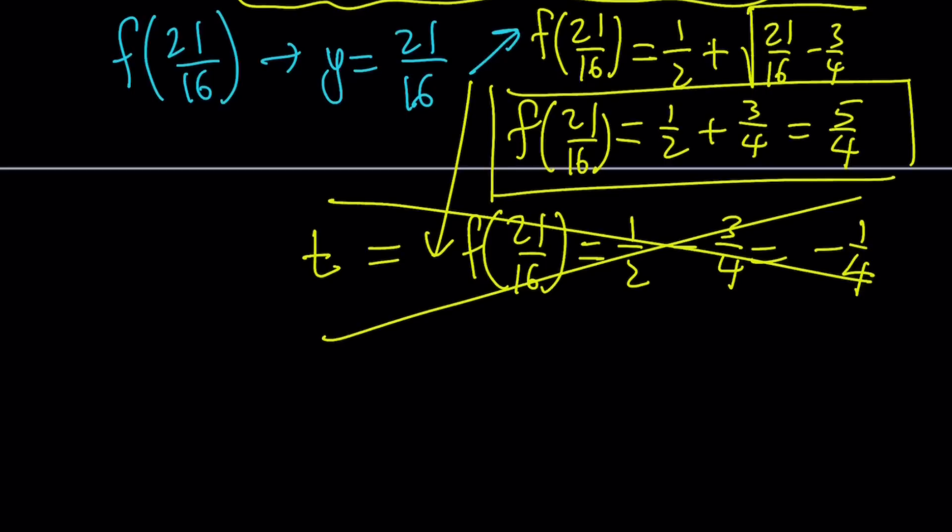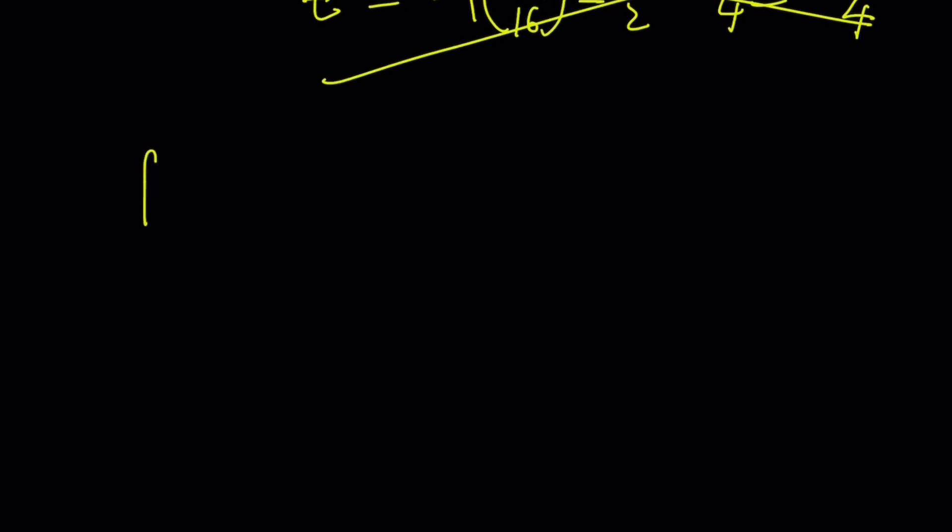So the value that we're looking for, f of 21 over 16, is going to be 5 fourths. What was the function? f of x minus square root of x plus 1 equals square root of x. So that's going to be the answer.